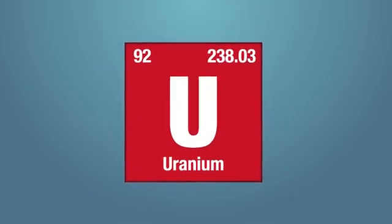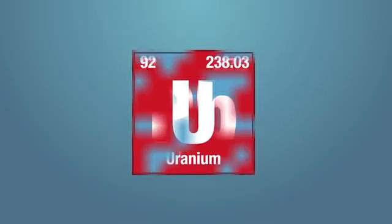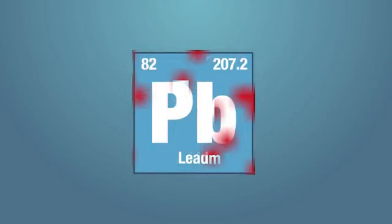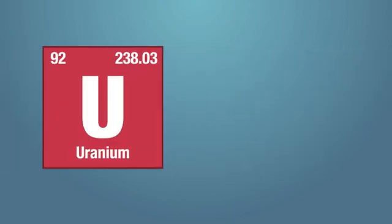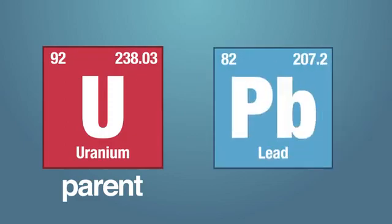For instance, uranium will radioactively decay through a series of steps until it becomes the stable element called lead. The original element is called the parent element, and the end result is called the daughter element.